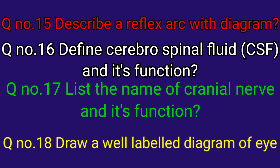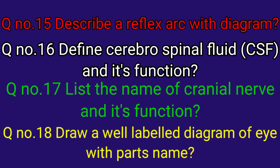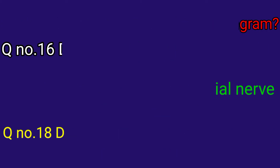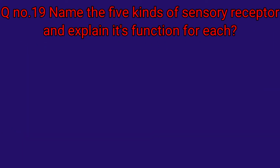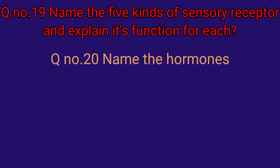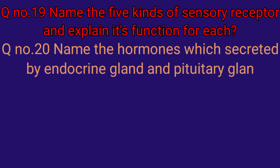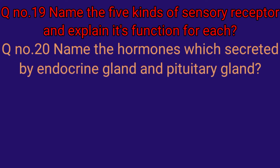Question number eighteen: draw a well-labeled diagram of the eye with part names. Question number nineteen: name the five kinds of sensory receptors and explain the function of each. Question number twenty: name the hormones secreted by the endocrine gland and pituitary gland.